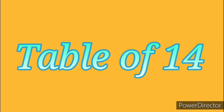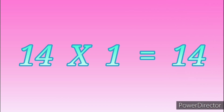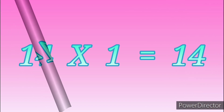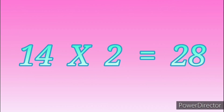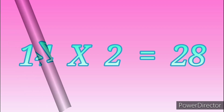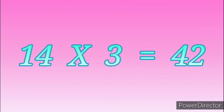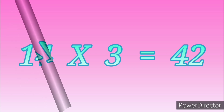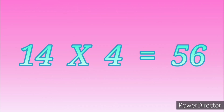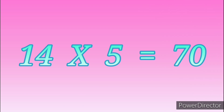Table of Fourteen. Fourteen ones are fourteen. Fourteen twos are twenty-eight. Fourteen threes are forty-two. Fourteen fours are fifty-six. Fourteen fives are seventy.